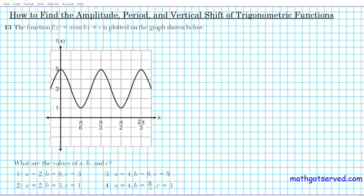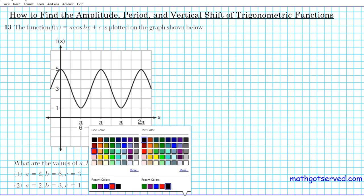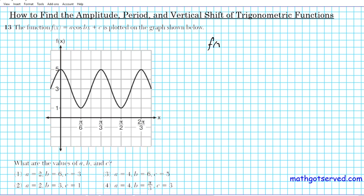Let's take a look at question 13. We're going to use the graph of a trigonometric function to find the amplitude, period, and vertical shift. The function f(x) = a·cos(bx) + c is plotted on the graph below. The question is: what are the values of a, b, and c that would result in the generation of this graph?